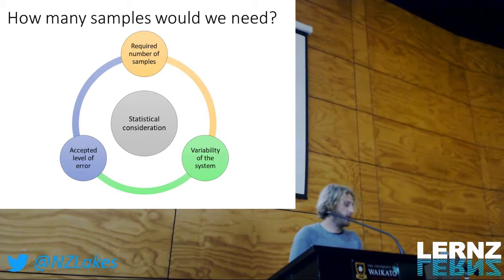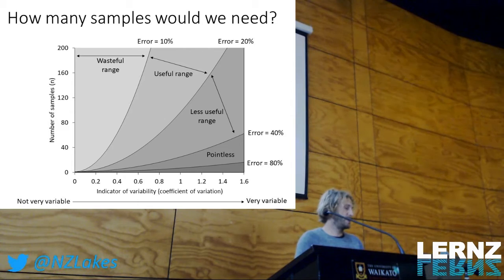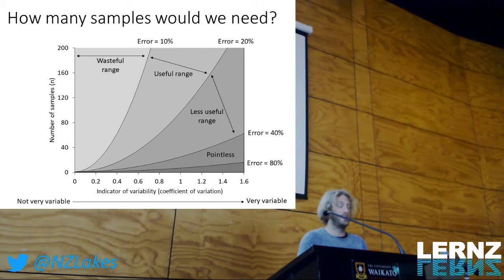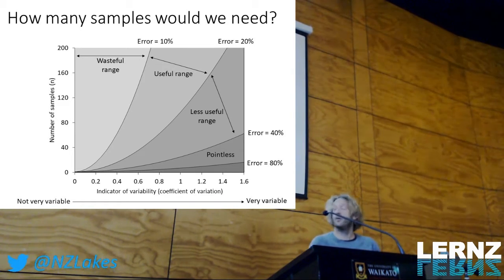In the Waikato, koi carp can reach really high densities. They resuspend sediment, which can reduce light penetration. They can also make nutrients available for algal growth.